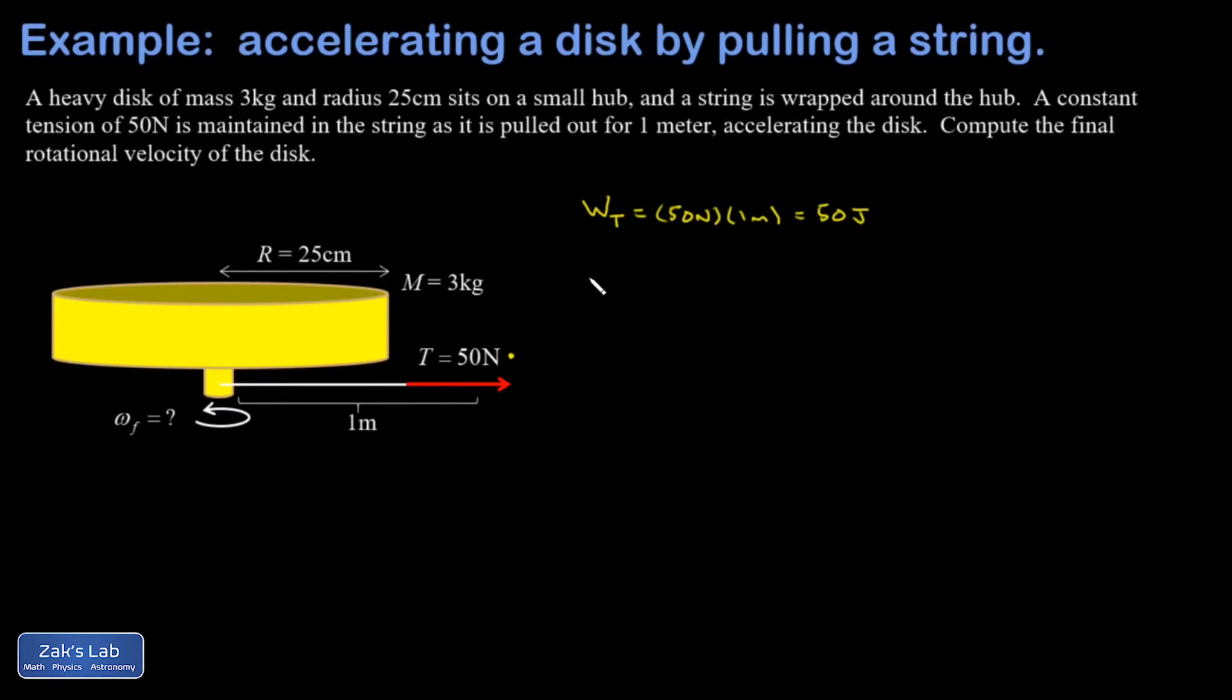Then I set that equal to the rotational kinetic energy. So just a reminder here, rotational kinetic energy is one half I omega squared. But the moment of inertia for a disk is given by one half MR squared for the disk.